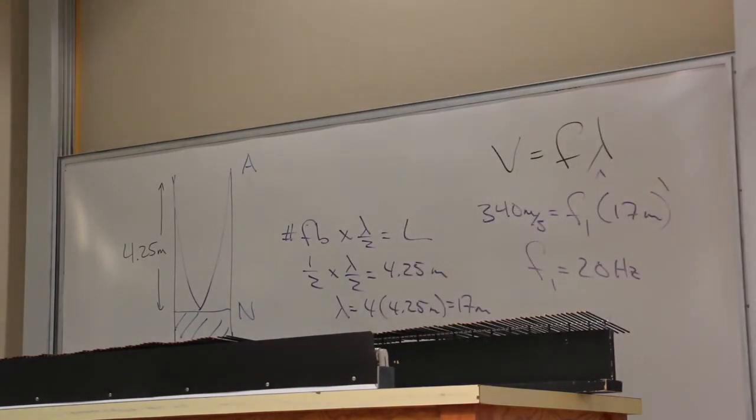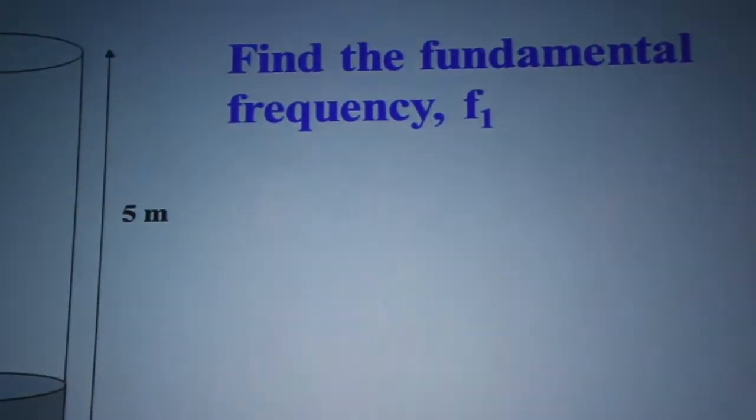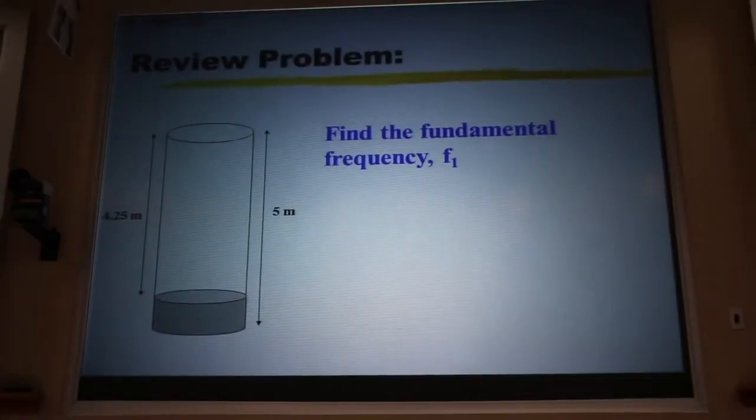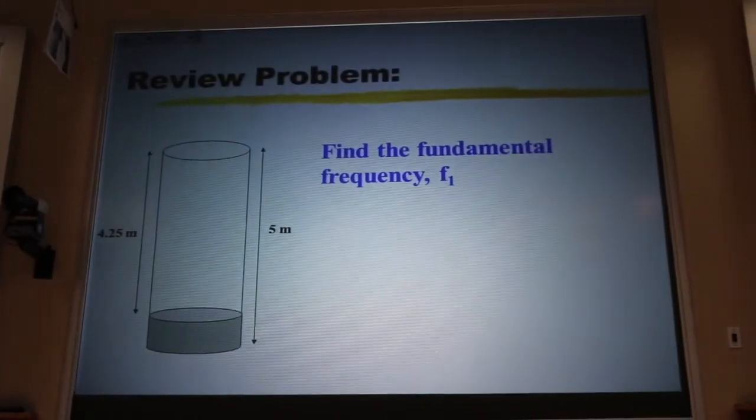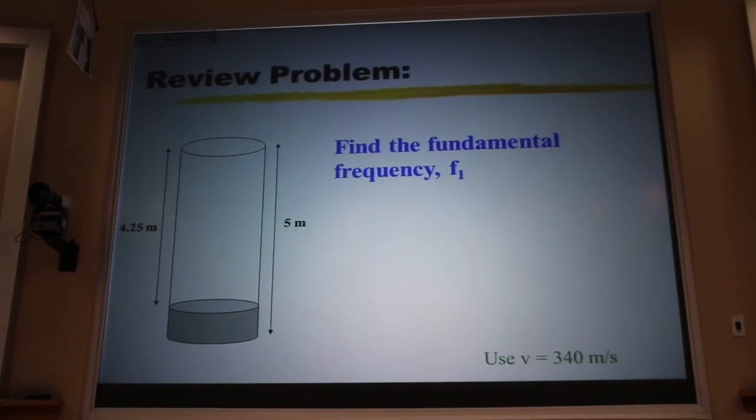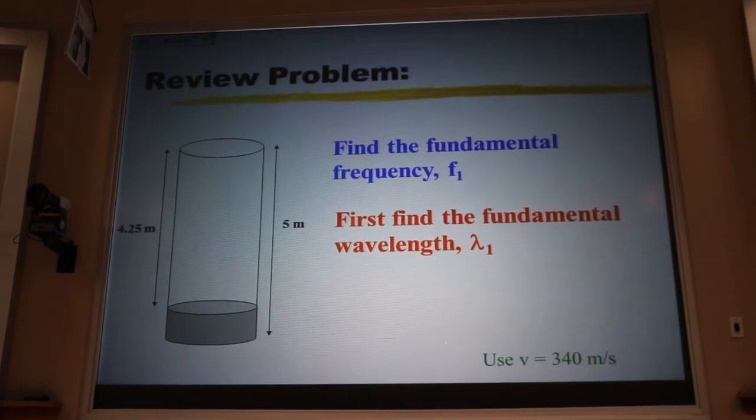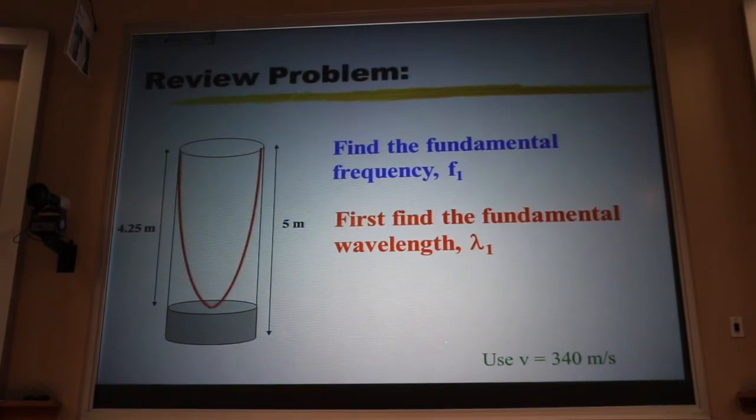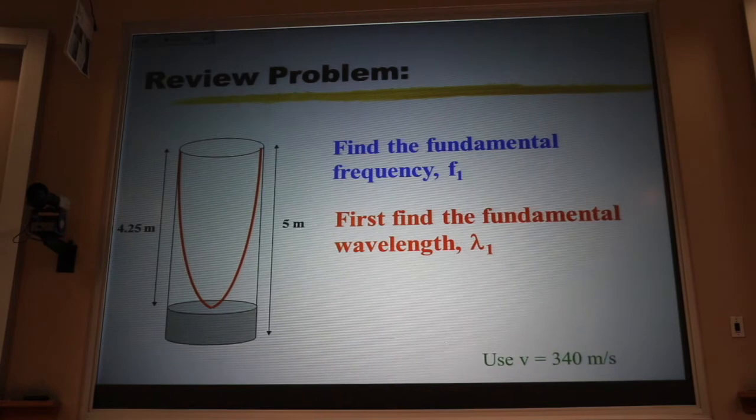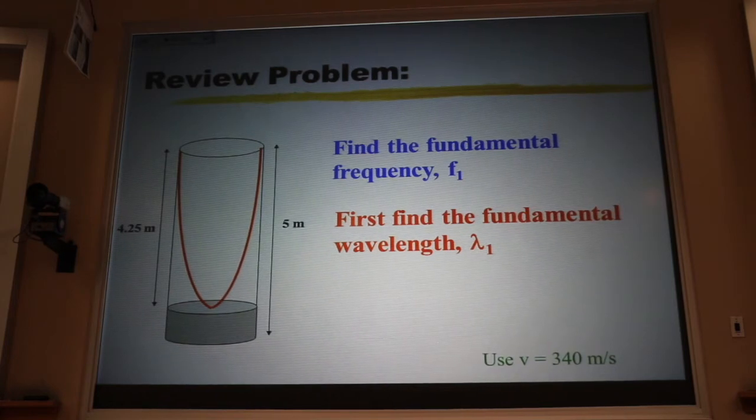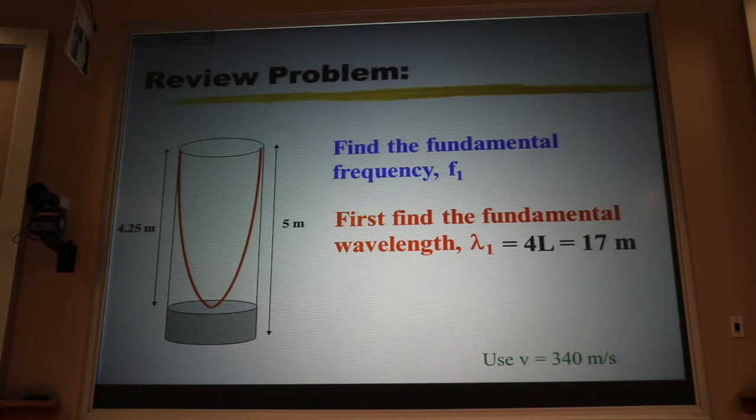See if your neighbor got 20 hertz. So first we found the fundamental wavelength. We drew a picture of it. We recognized that it was one-fourth of a wavelength. So we multiplied the length of the air column by 4, about 17 meters, and that's what got us to 20 hertz.